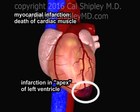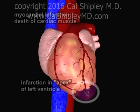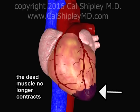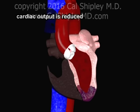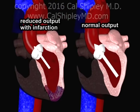While infarction may occur anywhere within the left ventricular musculature, the apex of the ventricle, as shown here, is a commonly involved area. The dead muscle in the area of infarction no longer contracts. Cardiac output is reduced, and this reduction in output is directly proportional to the size of the infarct.